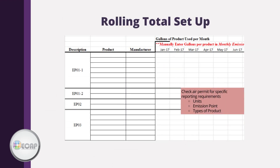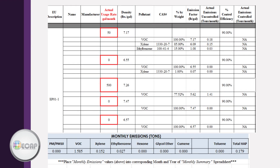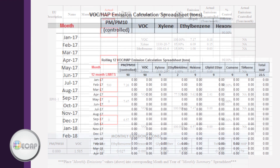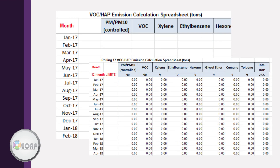This slide goes over the setup table for rolling totals, which includes the products, which emission points they are used in, and monthly usage. This example is for a paint booth and tracks the gallons of product used per month. You may have to complete 12-month rolling sums for multiple pollutants, and you may have multiple sources for each pollutant. Remember, the safety data sheets provide valuable data such as VOC percentages and density. ECAP can assist in developing a 12-month rolling total spreadsheet for anyone who does not have one currently available.